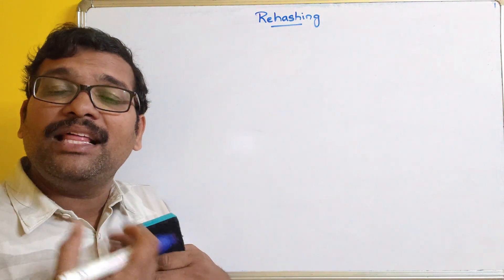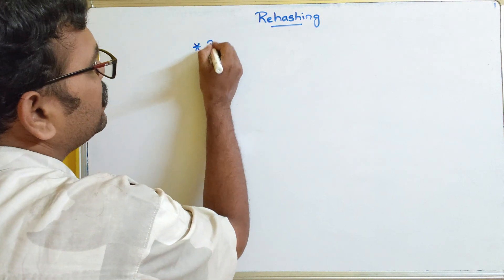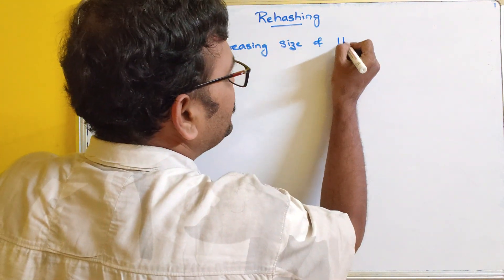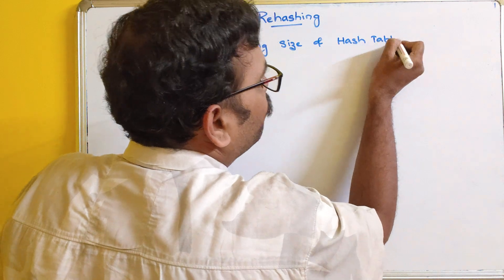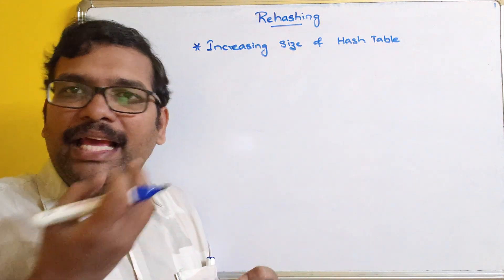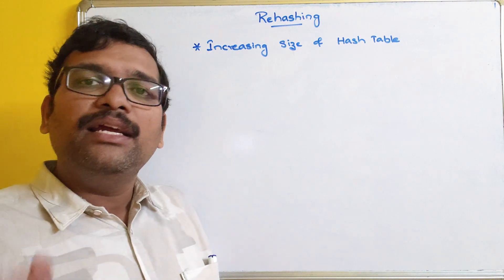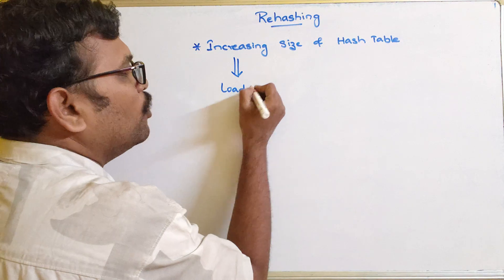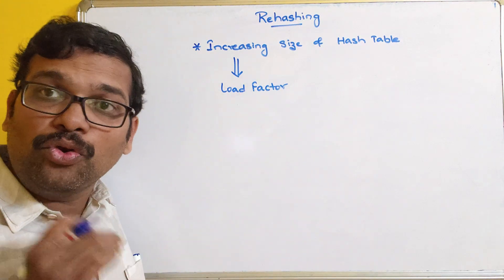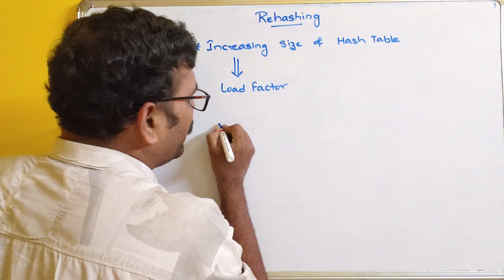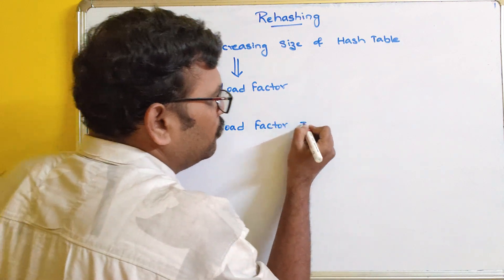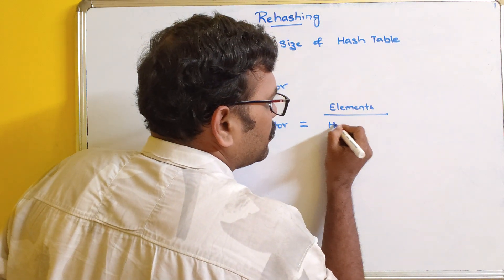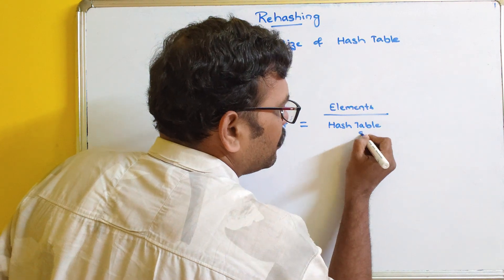The name itself indicates — rehashing means increasing the size of the hash table. Why does it require this? We know that entries are in the hash table and we have to store keys or elements into those entries. This increase depends upon a term called the load factor. The load factor formula is: load factor equals number of keys or elements to insert divided by hash table size.